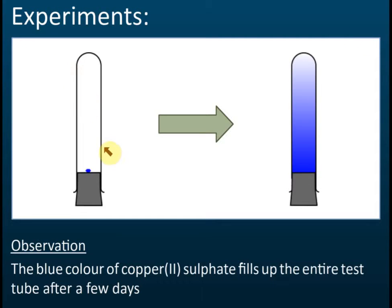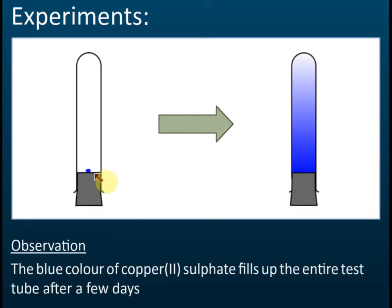Diffusion in solids. We have some gel inside a test tube, and then we put a piece of copper sulfate. Copper sulfate is blue in color, and you need to know the colors of copper sulfate. Make sure that you remember the colors of copper sulfate because in an exam they will ask you what color copper sulfate is.